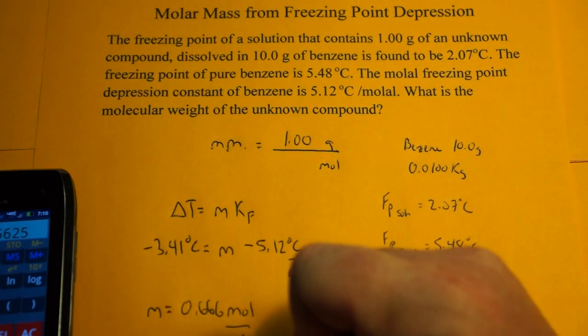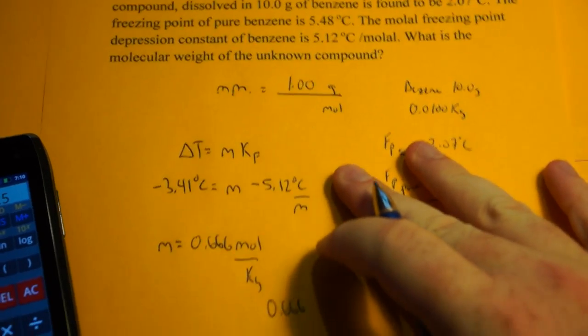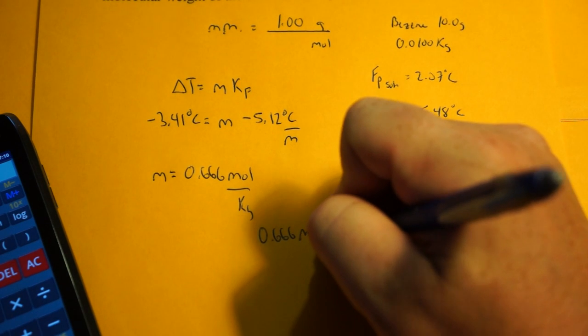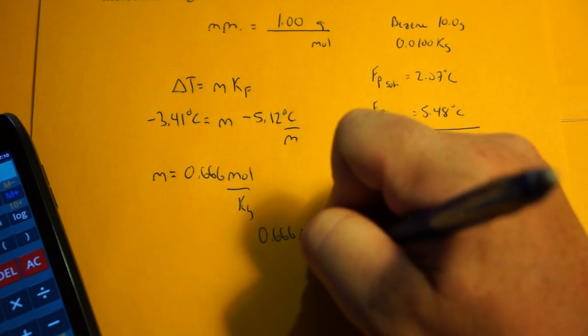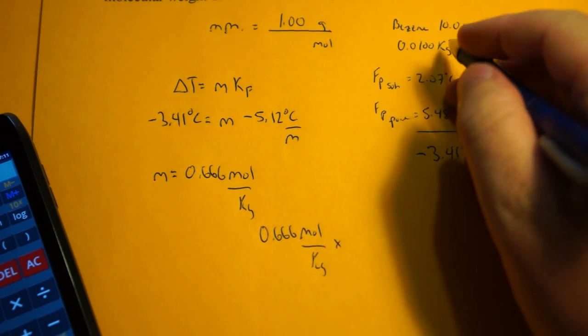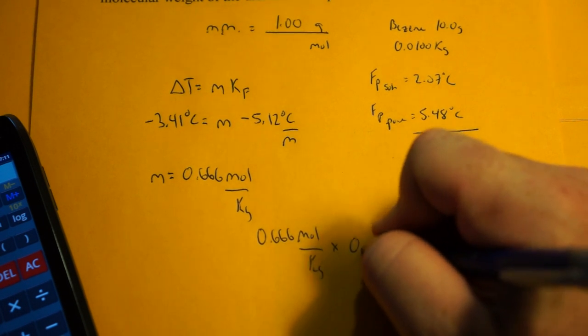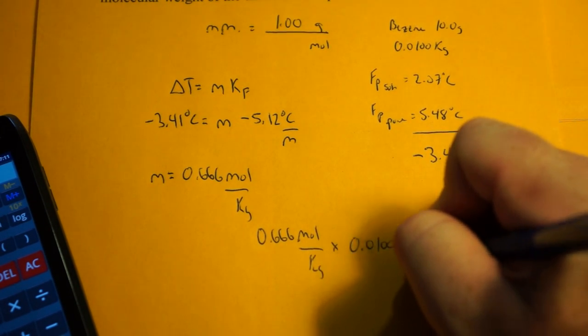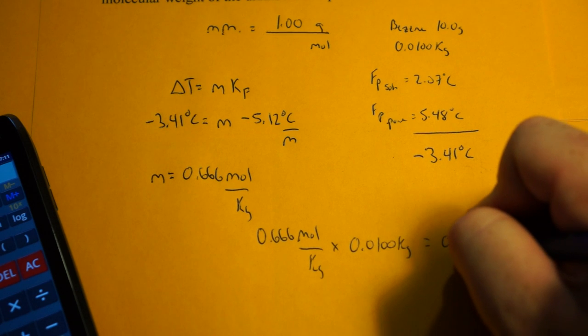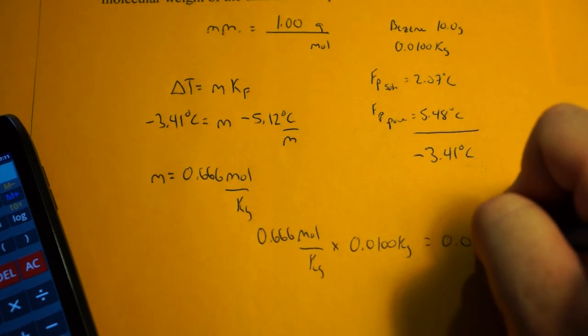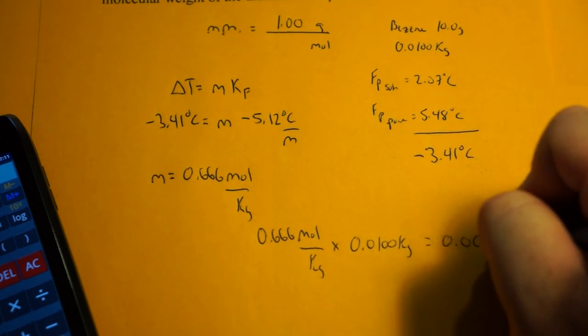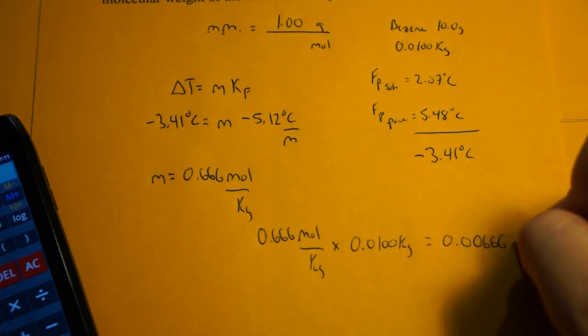If we take the 0.666 moles per kilogram and multiply it by the kilograms of benzene, which I did up here, 0.0100 kilograms, I get 0.00666 moles.